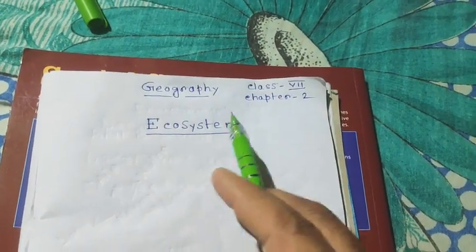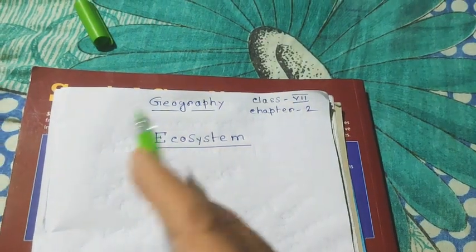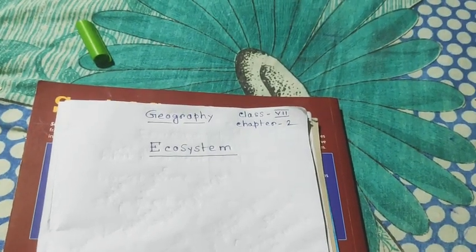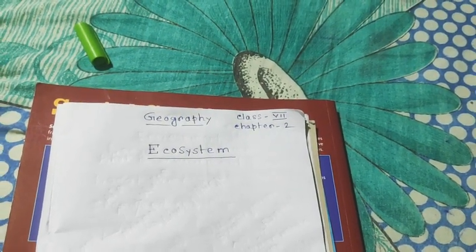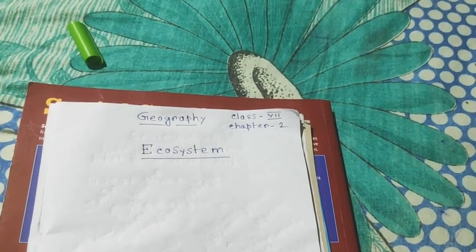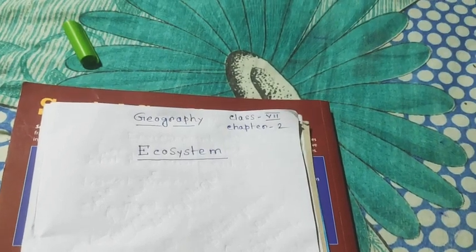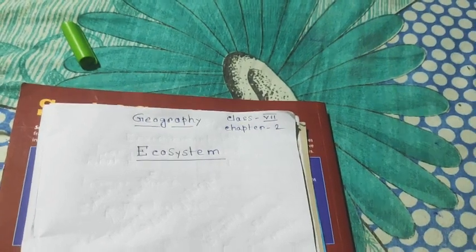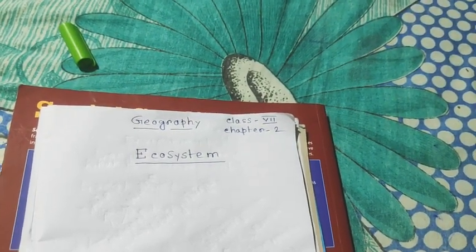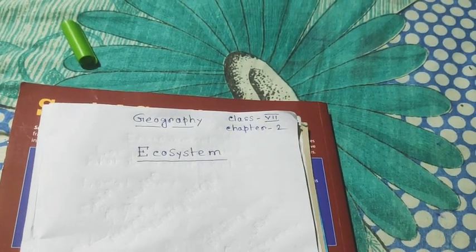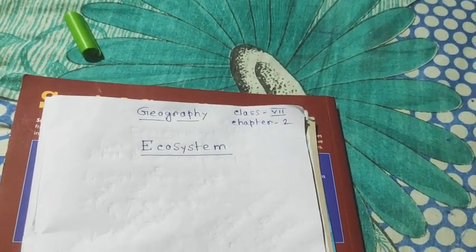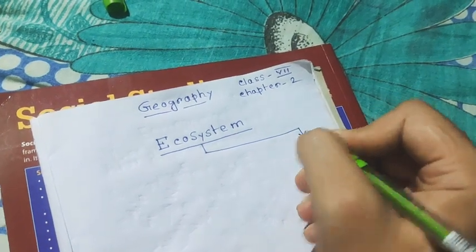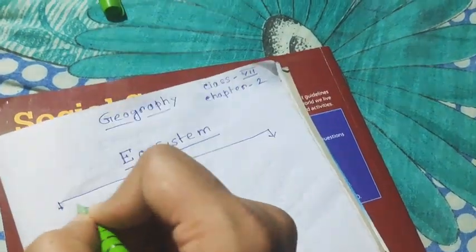Today we will discuss ecosystem — Class 7, Chapter 2 Geography. First of all, we will know about ecosystem. An ecosystem is a natural environment that includes biotic and abiotic elements of nature. Biotic elements include flora and fauna. Flora means plants and fauna means animals. So an ecosystem is made up of two components.